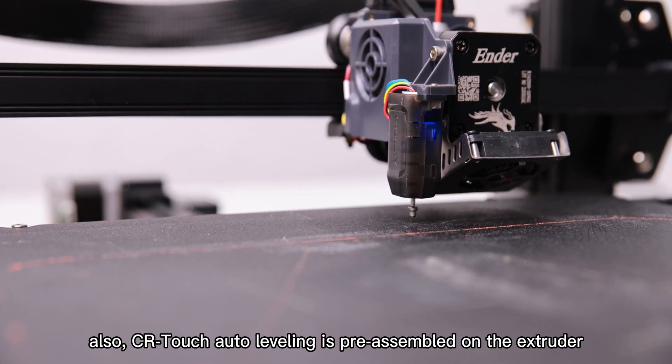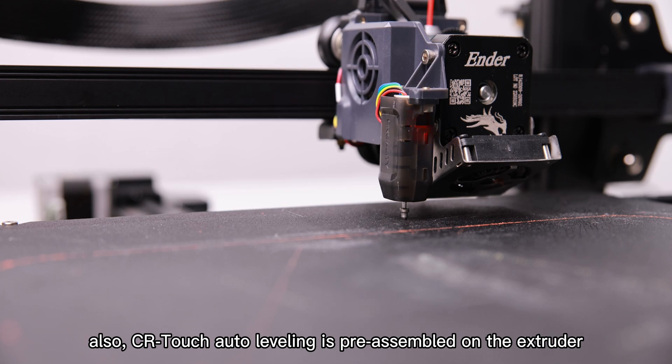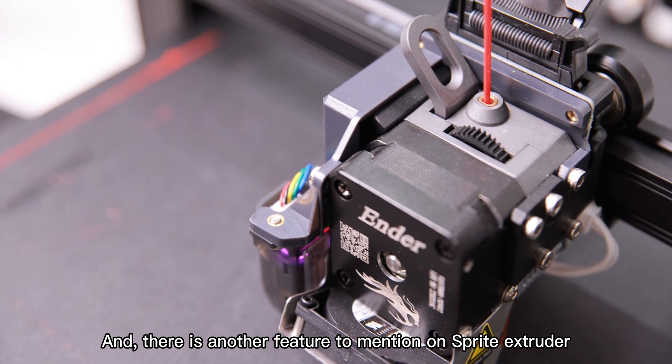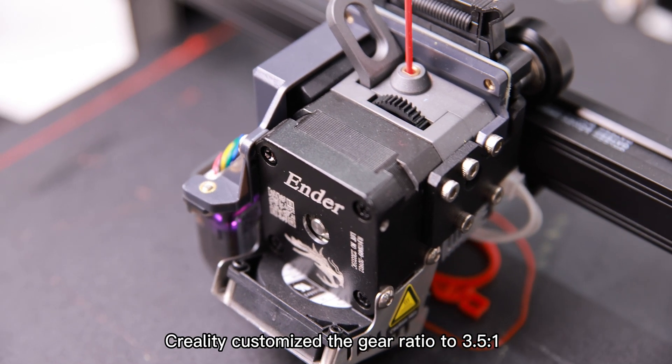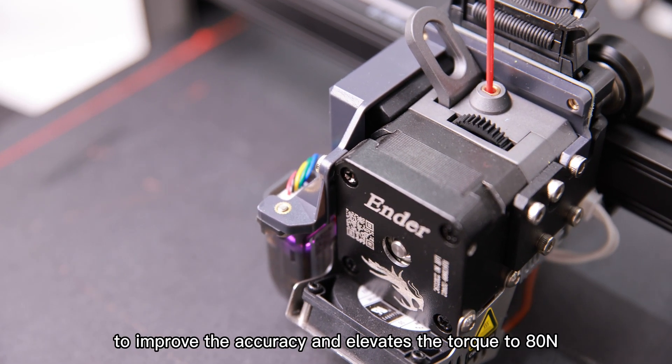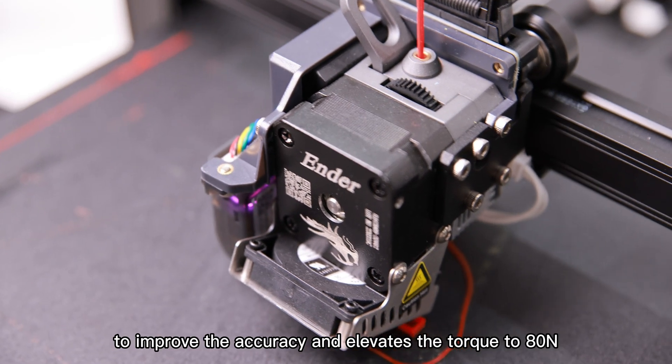Also, CR Touch Auto Leveling is pre-assembled on the extruder. And there is another feature to mention on the Sprite Extruder—Creality customized the gear ratio to 3.5 to 1 to improve the accuracy and elevate the torque to 80 Newton.